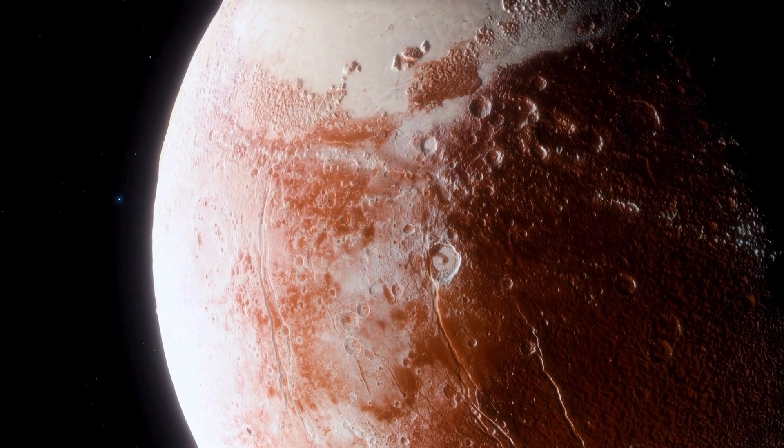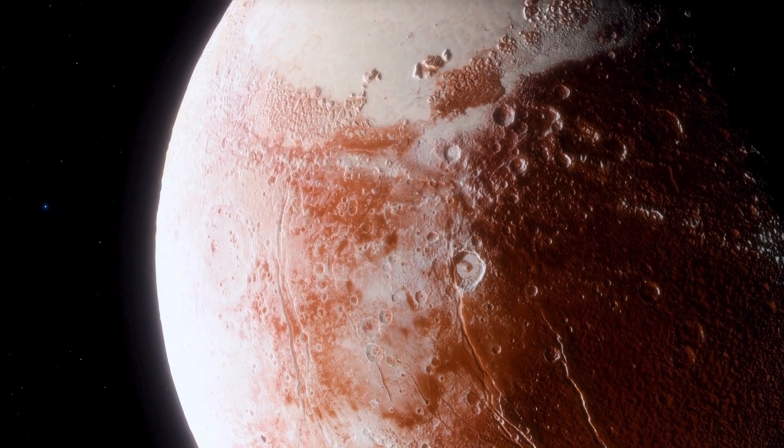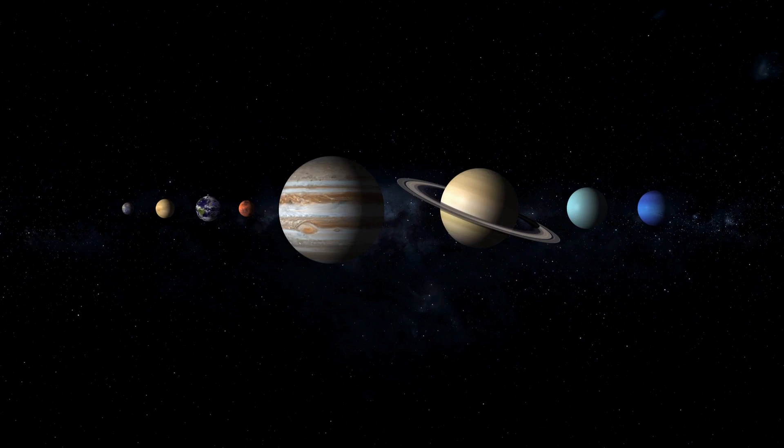Pluto's journey around the Sun is unlike any other planet in our solar system. It takes a stunning 248 years to complete a single orbit. This means that since its discovery in 1930, it hasn't even completed one full transformation yet.